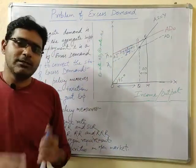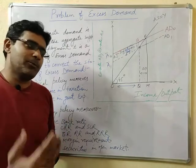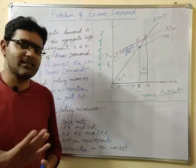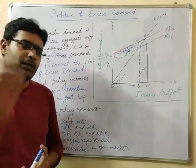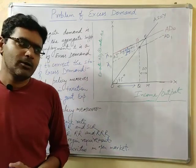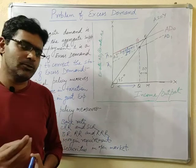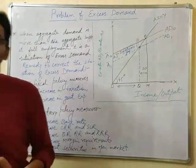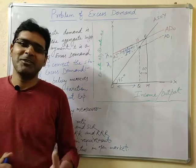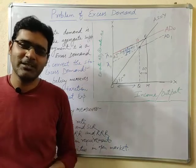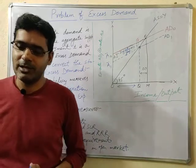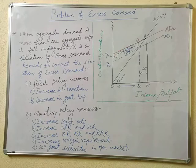This is what the concept of excess demand is all about. In the previous video we discussed deficient demand, and in this video we have dealt with excess demand. That concludes Unit 3, which is determination of income, output and employment. From the next class we will begin with yet another interesting topic — government budget and the economy — which will carry six marks each in your examinations. Thank you.